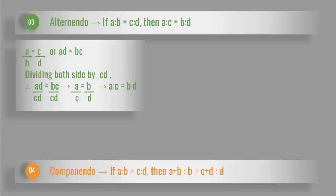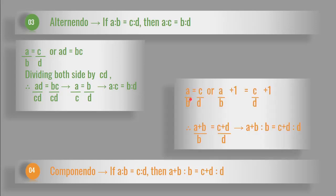Next, fourth, componendo property. If A is to B is equal to C is to D, then A plus B is to B is equal to C plus D is to D. Here A over B is equal to C over D. Adding 1 to both sides: A over B plus 1 is equal to C over D plus 1. By taking LCM, we get A plus B over B is equal to C plus D over D. Therefore, A plus B is to B is equal to C plus D is to D.